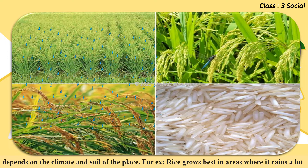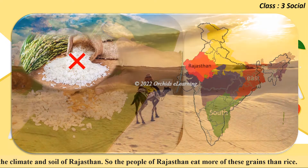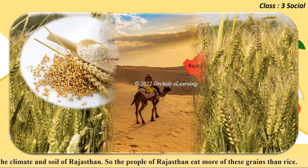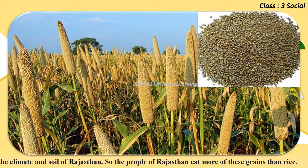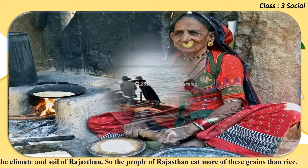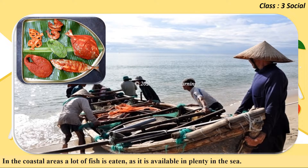The people of East and South India eat mainly rice. Rice cannot be properly grown in Rajasthan, where it rains very little and the soil is sandy. Jowar and bajra grow well in the climate and soil of Rajasthan, so the people of Rajasthan eat more of these grains than rice. In the coastal areas, a lot of fish is eaten as it is available in plenty in the sea.